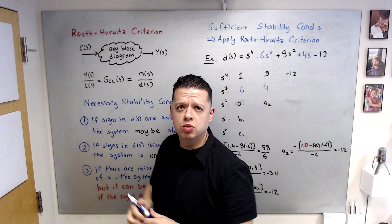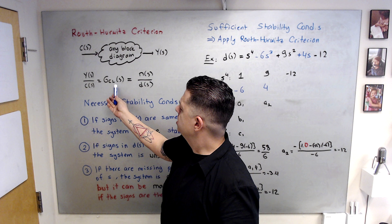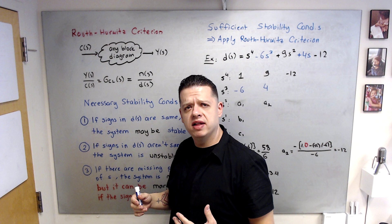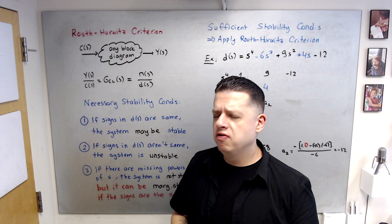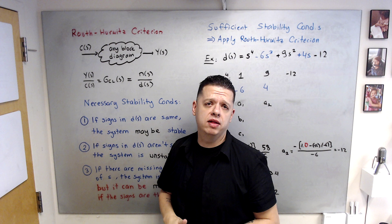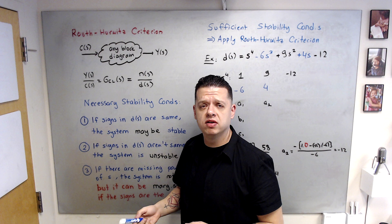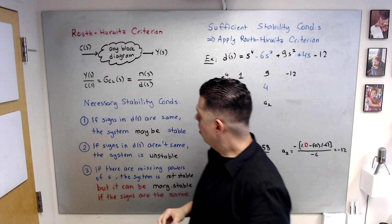You have input and output. The first step is to find the closed-loop system transfer function between the input and the output. When you simplify things, you are going to have a numerator polynomial divided by the denominator polynomial. This denominator will tell you if the resulting closed-loop system is stable or not. For stability, you want all of the poles — roots of the denominator — to be on the left-half plane of the complex plane.